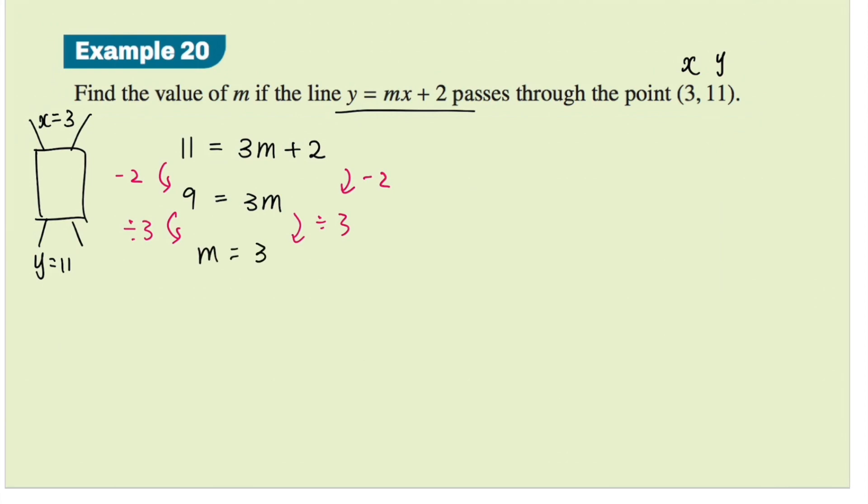This means the gradient is 3. Let's quickly rewrite the equation to present our final answer. The equation is y equals 3x plus 2. Since the question asks specifically to find the value of m, therefore m equals 3.